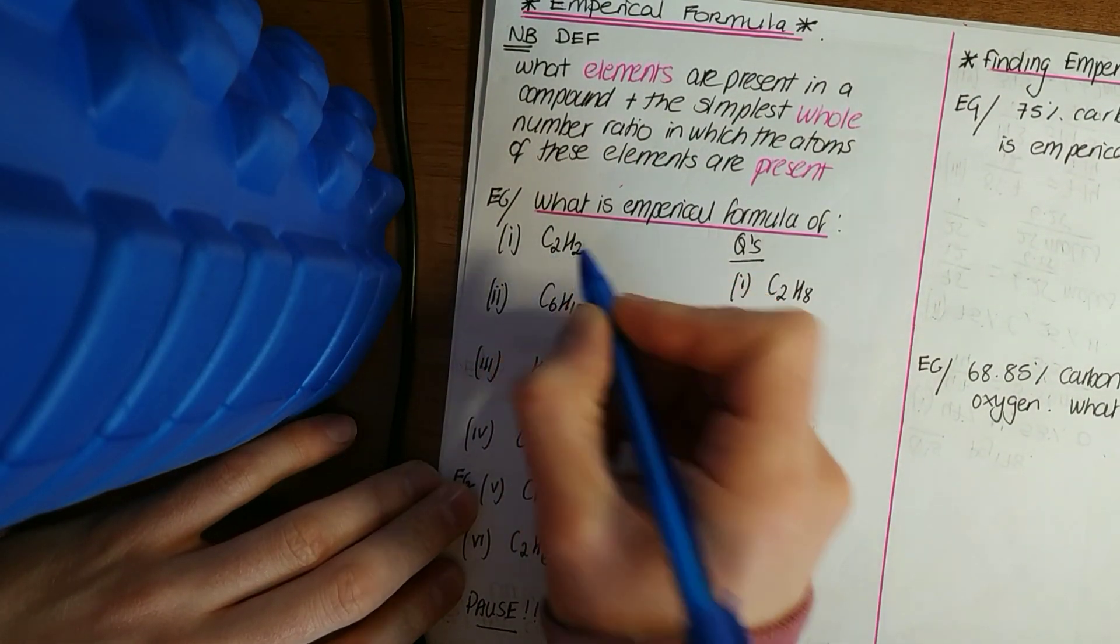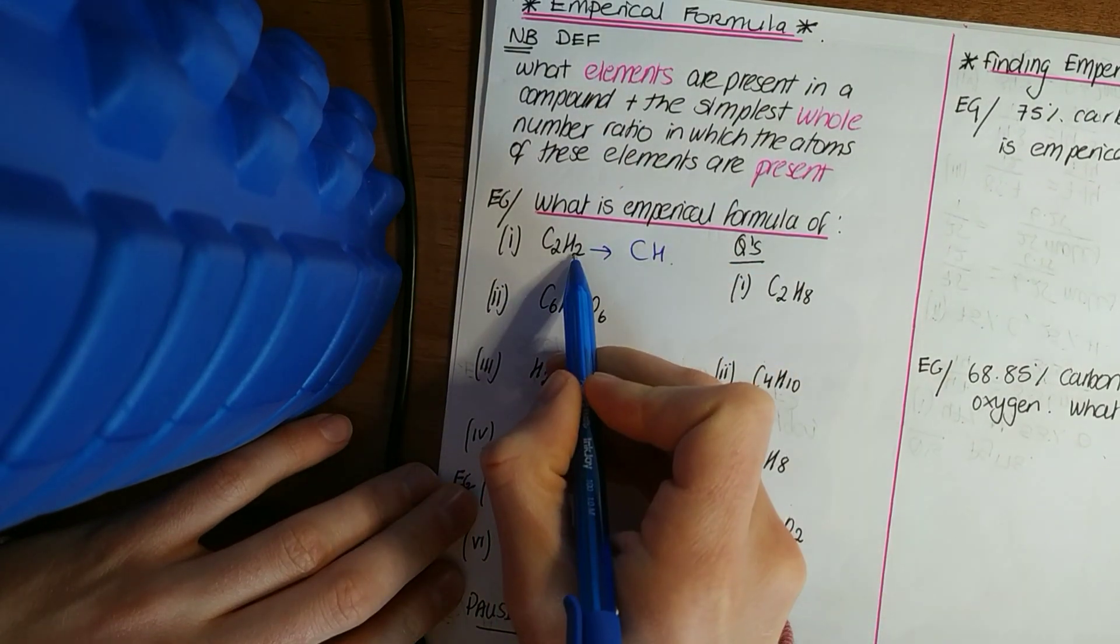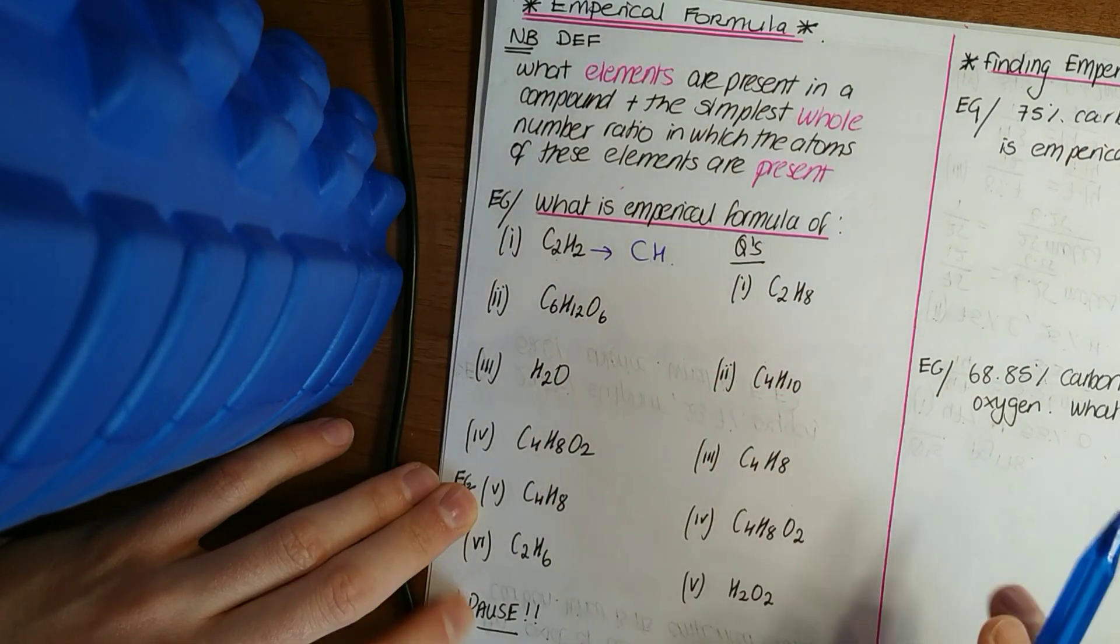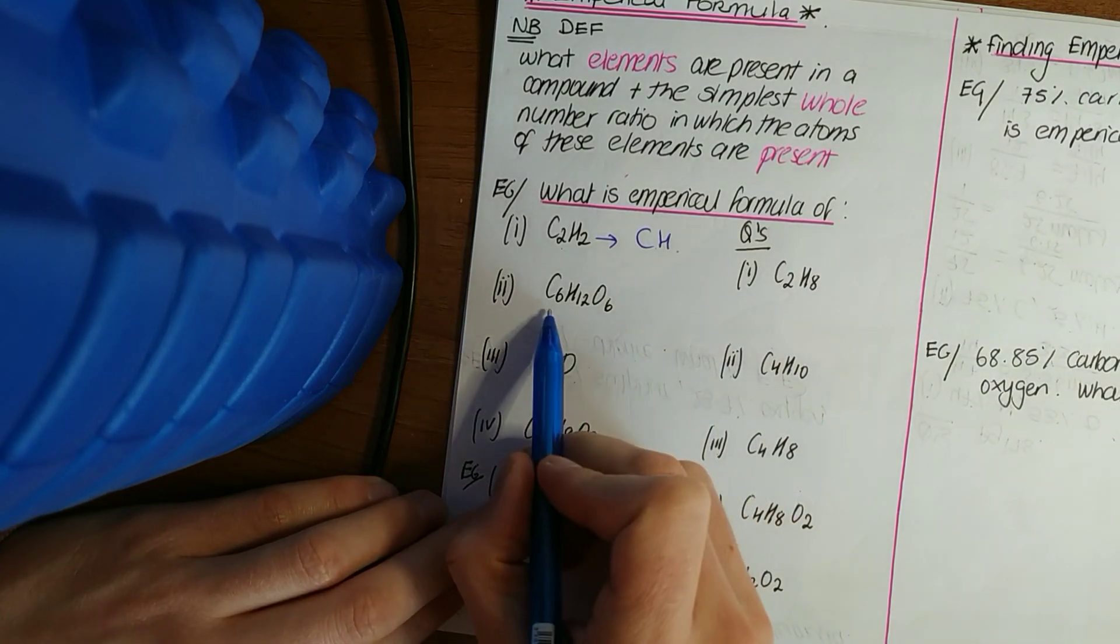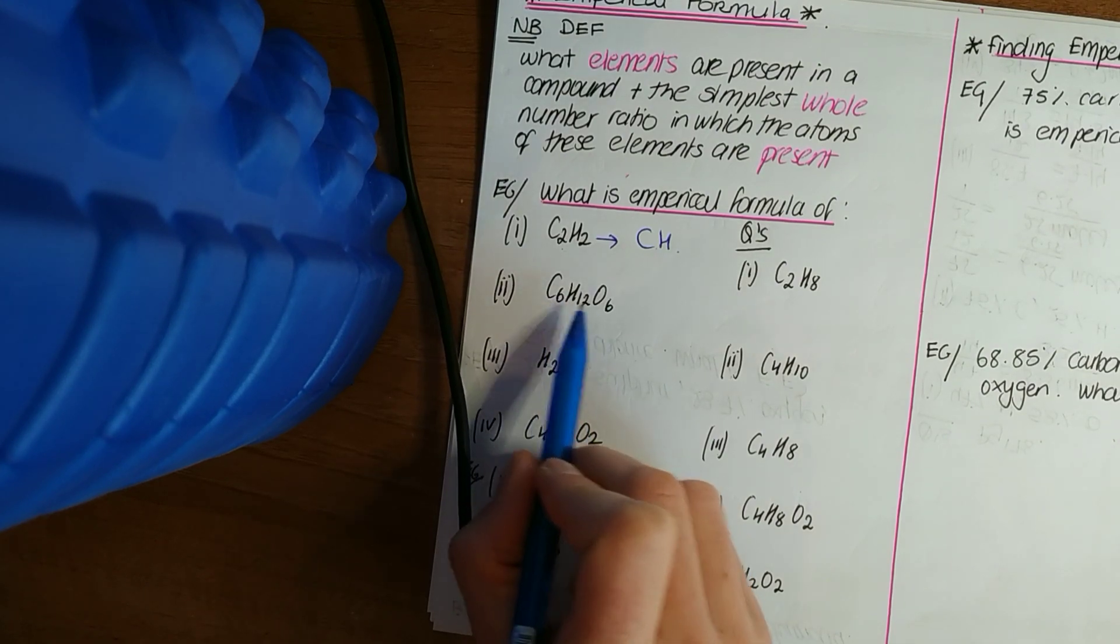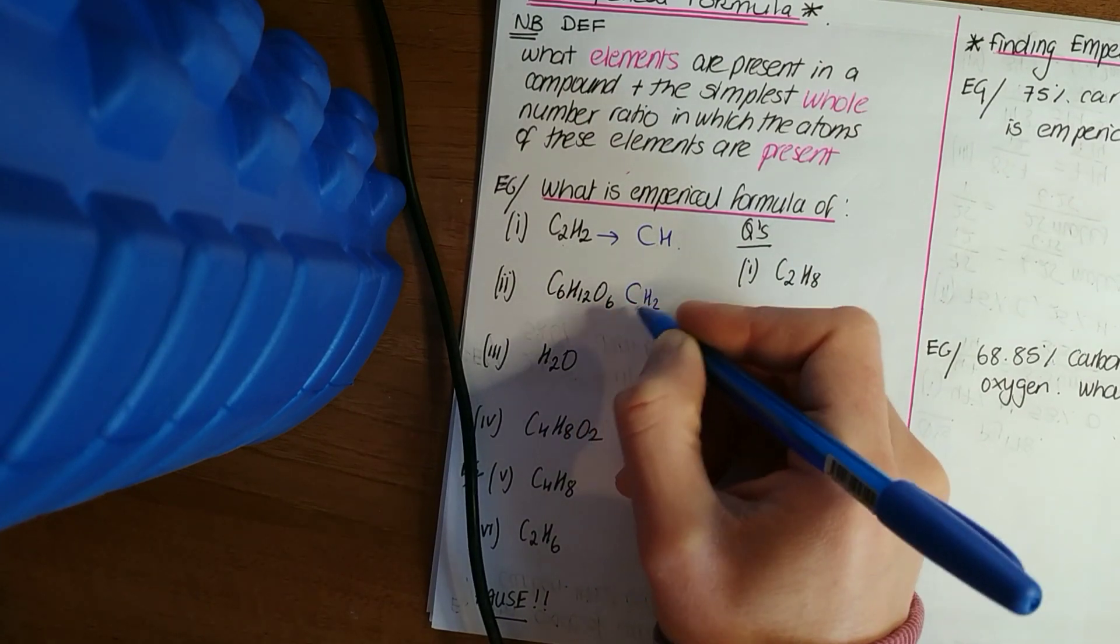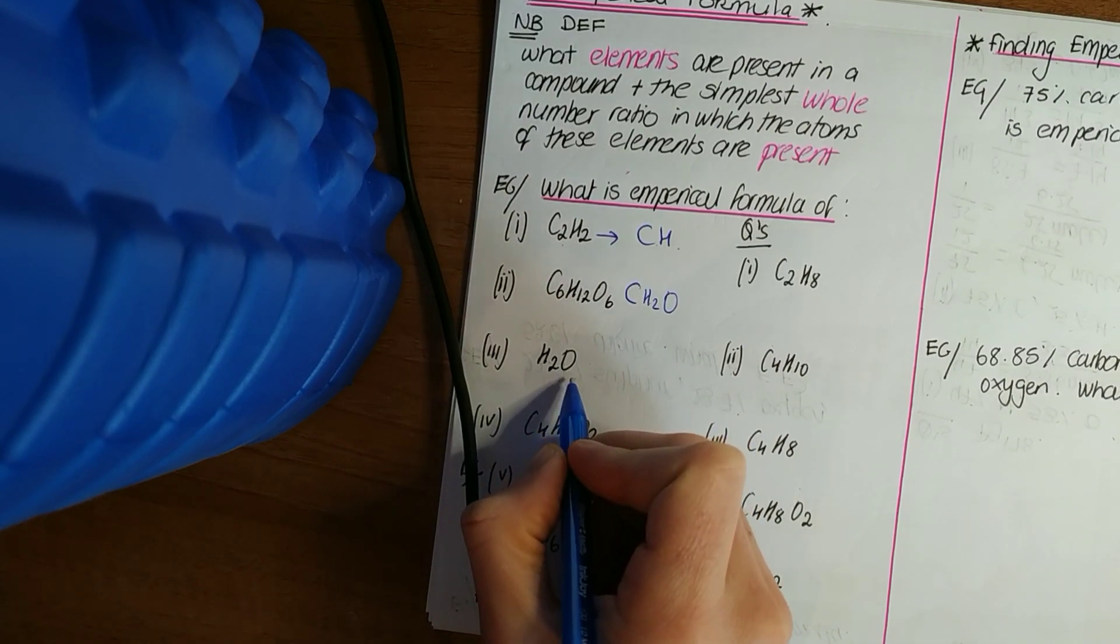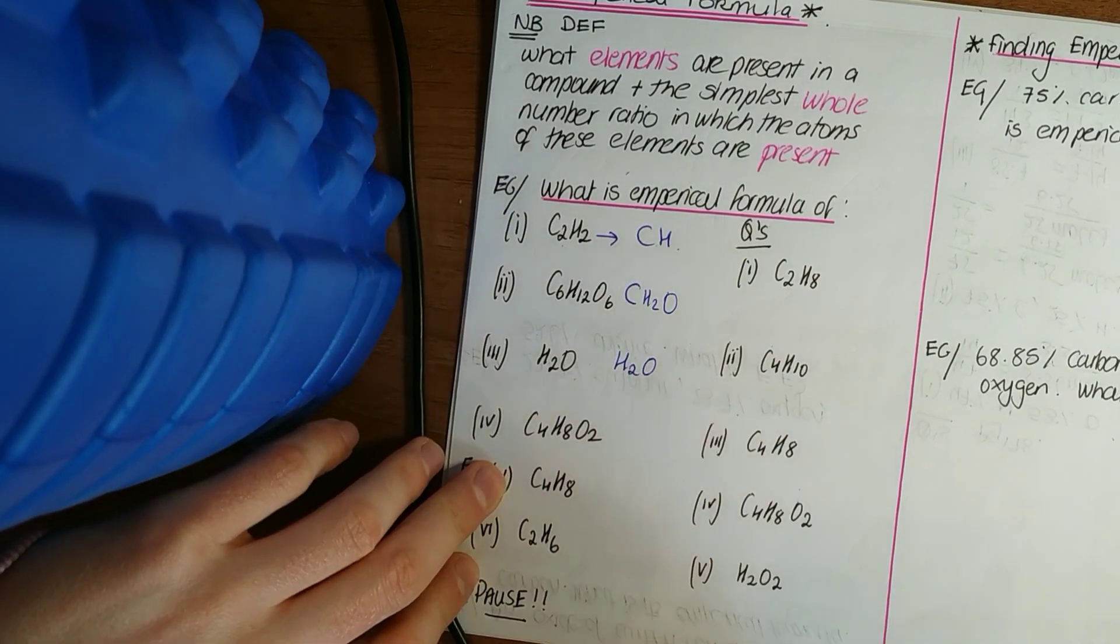So C₂H₂ becomes, say our ethyne, it becomes CH. What they do there is 2 into 2 goes once, 2 into 2 goes once, and becomes C₁H₁ or CH. You just find the highest common factor between the numbers at the bottom. Next one: C₆H₁₂O₆. Highest common factor of 6, 12, and 6 is 6. 6 into 6 goes once, 6 into 12 goes twice, 6 into 6 goes once. H₂O - if you look at that there, highest common factor is just 1, so it actually just becomes H₂O, stays the same.